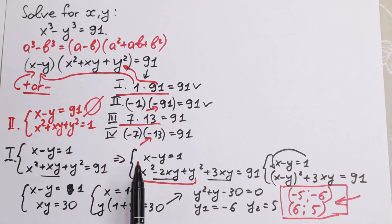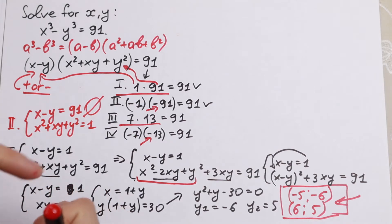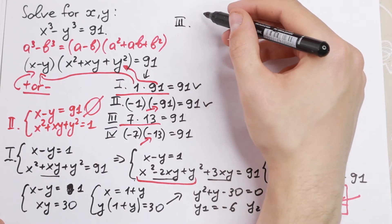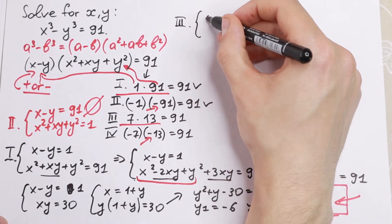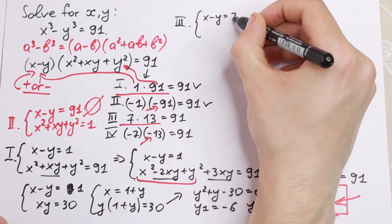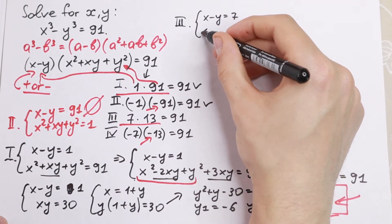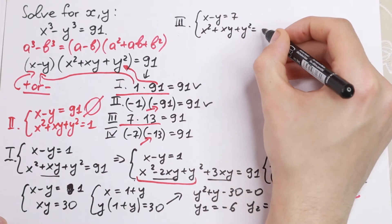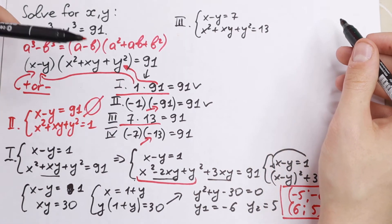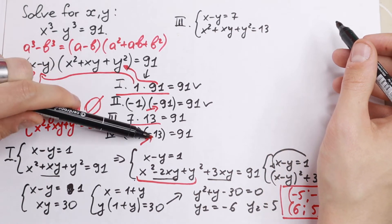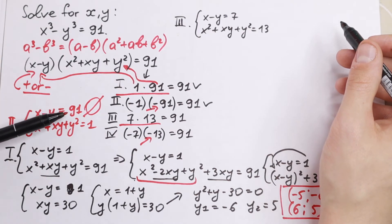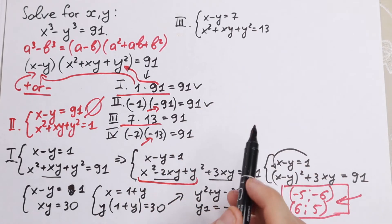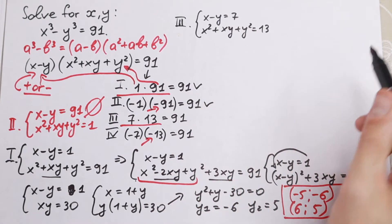Now for the third case: x minus y equals 7 and x squared plus xy plus y squared equals 13. We rejected the second case, and we already solved the first case finding two pairs. Let's solve this third case using the same logic.